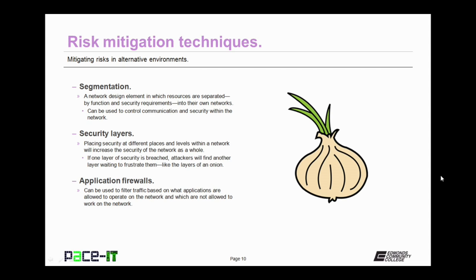Another risk mitigation technique is security layers. Placing security at different places and levels within a network will increase the security of the network as a whole. If one layer of security is breached, attackers will find another layer waiting to frustrate them — like the layers of an onion. Hopefully it makes that hacker cry at each layer that they get to.